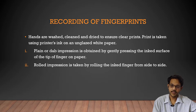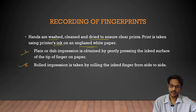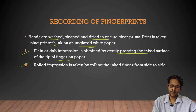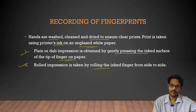For recording fingerprints, hands are first washed, cleaned, and dried to ensure clear prints. The print is taken using printer's ink on unglazed white paper. There are two methods: plain or dab impression, obtained by gently pressing the inked fingertip on paper; and rolled impression, taken by rolling the inked finger from side to side, which allows more ridges and patterns to be studied.